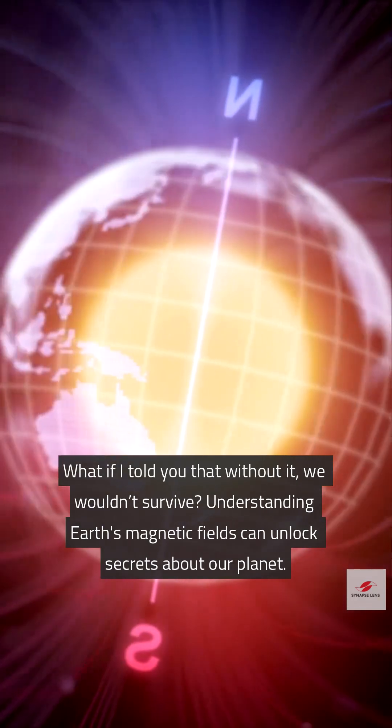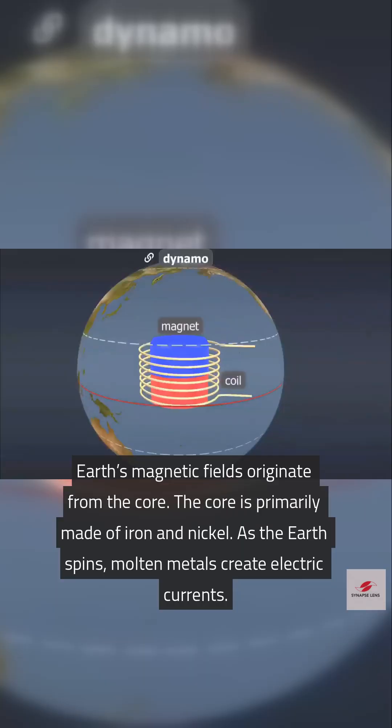Understanding Earth's magnetic fields can unlock secrets about our planet. Earth's magnetic fields originate from the core. The core is primarily made of iron and nickel.